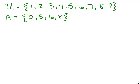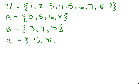So A of these numbers has 2, 5, 6 and 8. Let's make another set from the universal set. So if I pick some other numbers, how about if I pick 3, 4 and 5? That's another set. Let's pick another set. How about 5, 8 and 9?